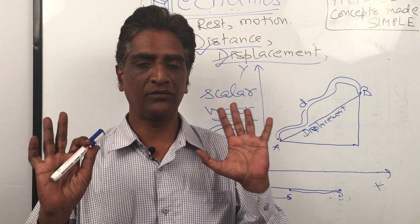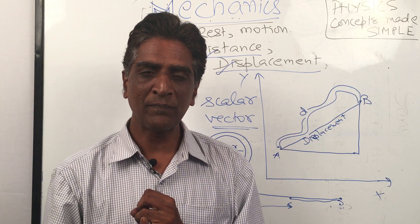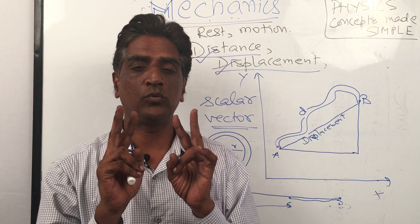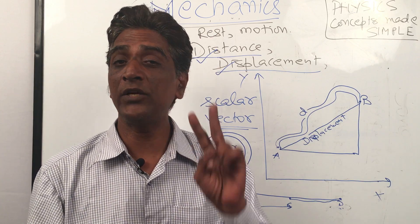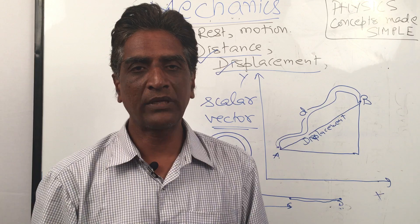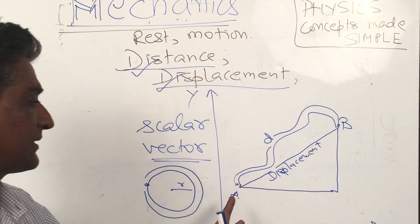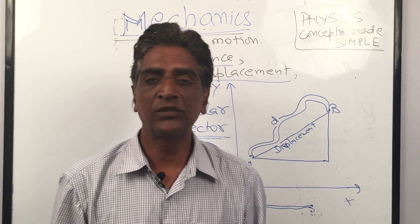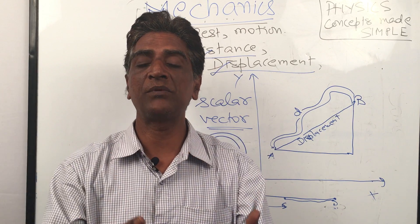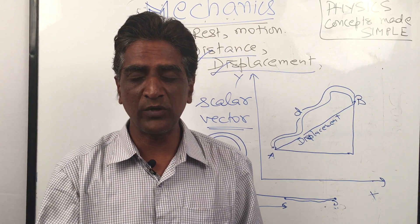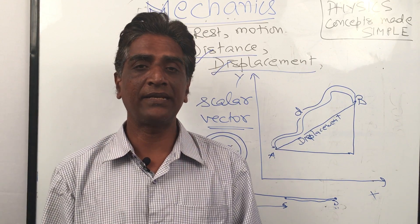So displacement and distance are two different concepts. To summarize: distance is the total path traveled; displacement is the net straight-line distance between the initial and final points. Two-dimensional motion must be reduced to two one-dimensional motions — you'll understand this clearly when we do vectors. Our next concept: distance leads to speed, and displacement leads to velocity. The next lesson will be speed, velocity, and their units. This is Narendra Kumar from Narendra Academy — thank you so much.